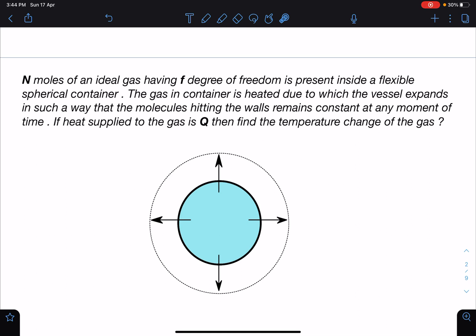So here is the problem statement: N moles of an ideal gas having f degree of freedom is present inside a flexible spherical container. The gas in the container is heated due to which the vessel expands in such a way that the molecules hitting the walls remains constant at any moment of time. That means the number of molecules which were hitting earlier, that number remains the same even if it is expanding.